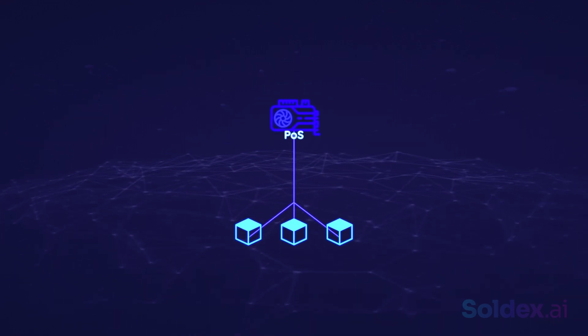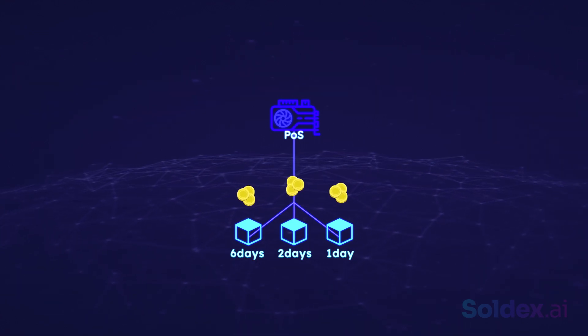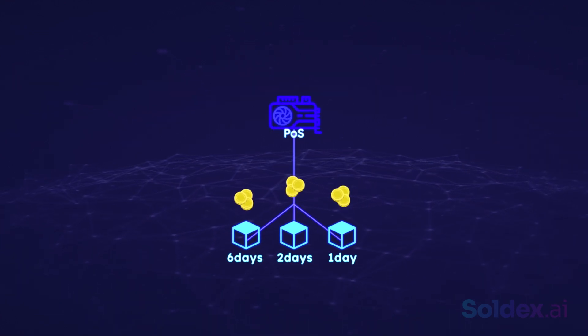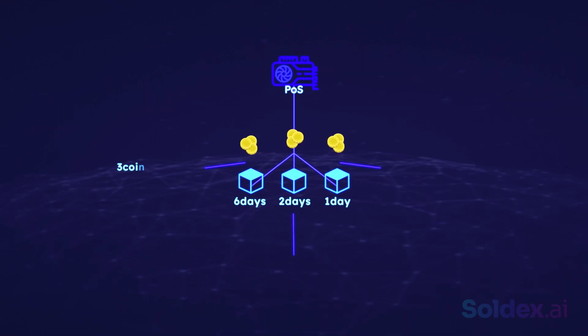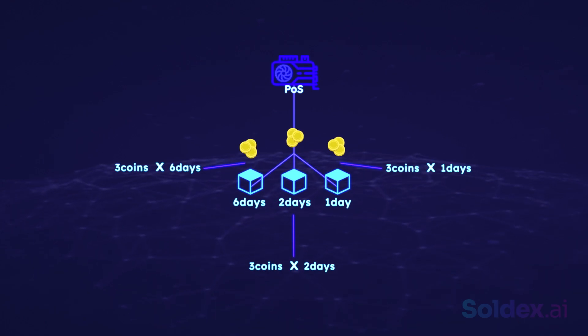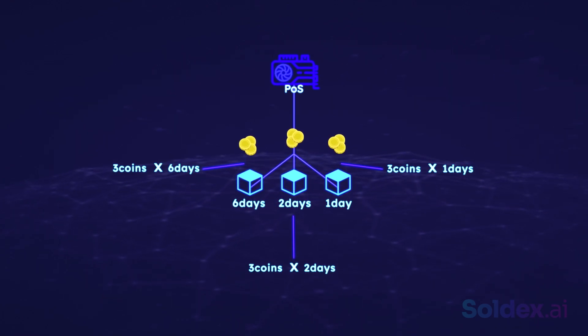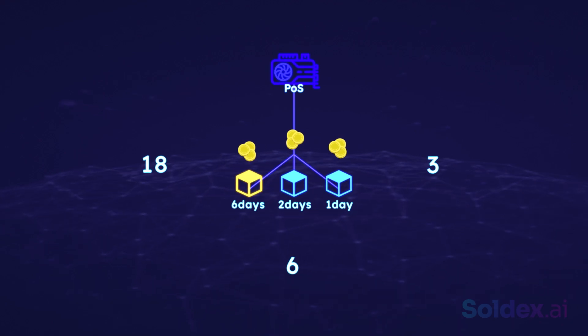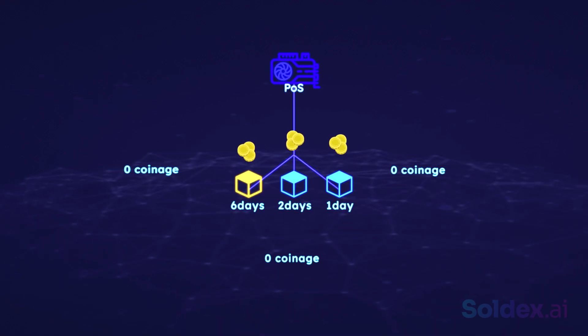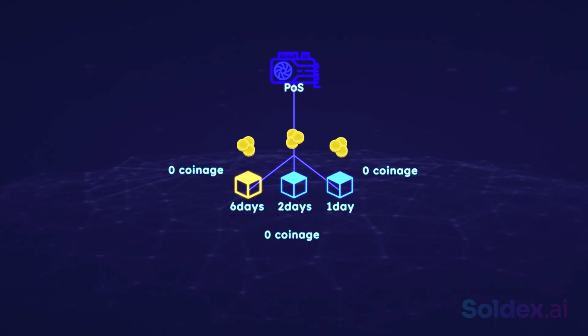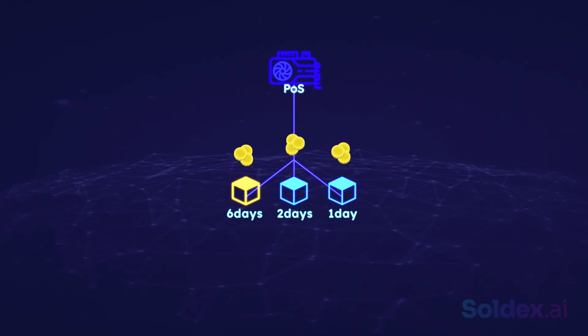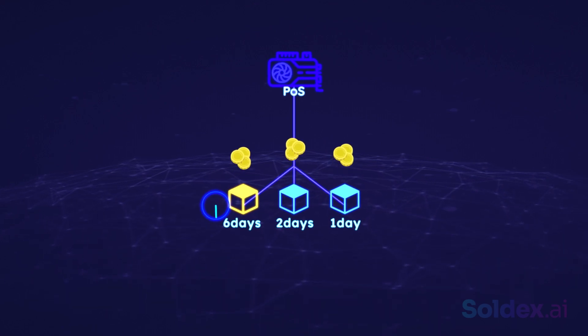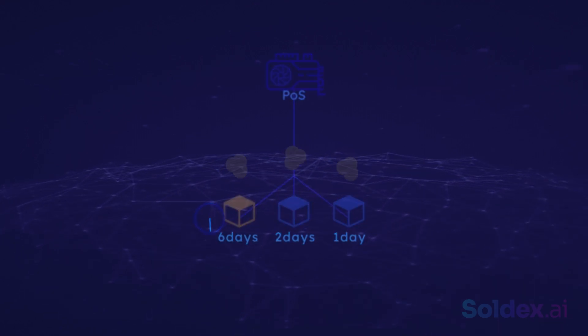Coinage selection. The selection process picks nodes based on how long they've been staking their tokens. The longer you've been staking your coins, the higher your chances of being chosen. The coinage is calculated by multiplying the number of coins staked by the number of days the coins have been staked. Once a validator forges a block, their coinage is reset to zero. This is to prevent large stake nodes from dominating the network. A selected node must wait a certain period of time before being selected again.